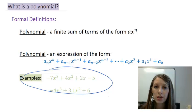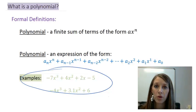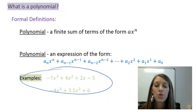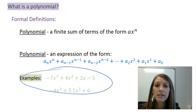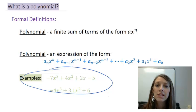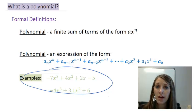Anything that follows this structure of nice operations — addition, subtraction, multiplication, and positive exponents — those are polynomials. I've identified it as a sentence of nice mathematical operations. The reason I use the word sentence is because we know that a sentence in the English language has a very official format: it starts one way, it ends one way, and everything in between follows a certain structure. The same thing goes with polynomials.